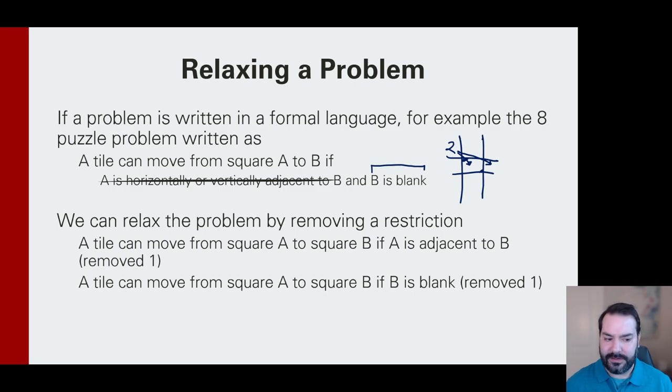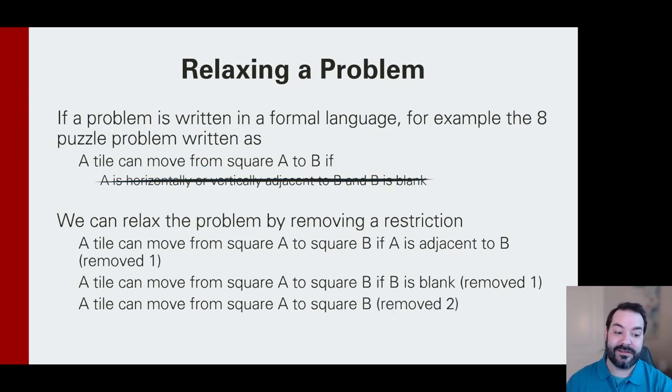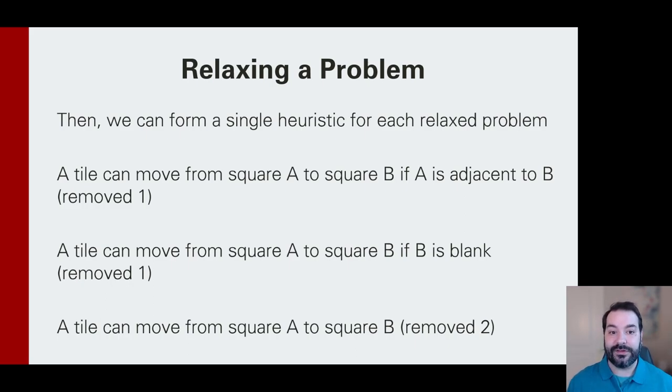And the last one that we could operate off of is, what if both of those were stripped out? Then a tile can move from A to B. There is no if going on there. All of these are just relaxing our problems, and what we can start to think about is those turn into heuristics. Each one of those is turning into their own heuristic.